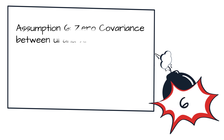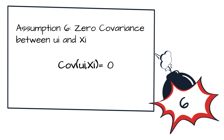The sixth assumption states that there is zero covariance between ui and xi — that is, Cov(ui, xi) = 0. The disturbance u and the explanatory variable x are uncorrelated with each other.